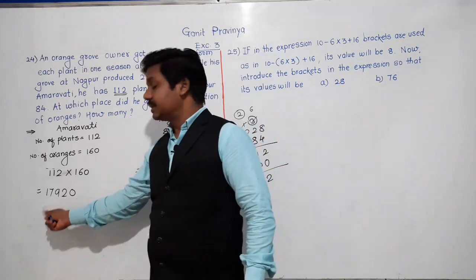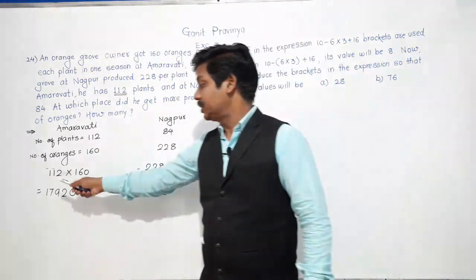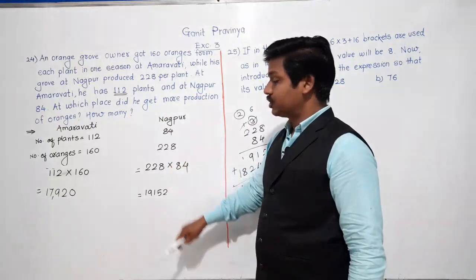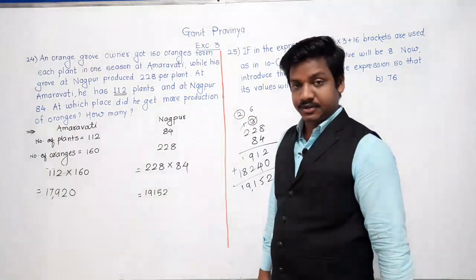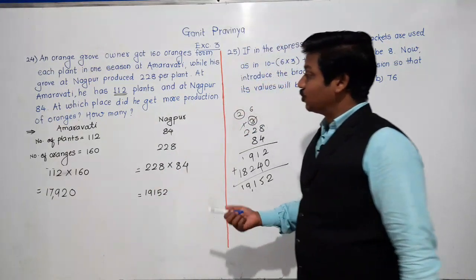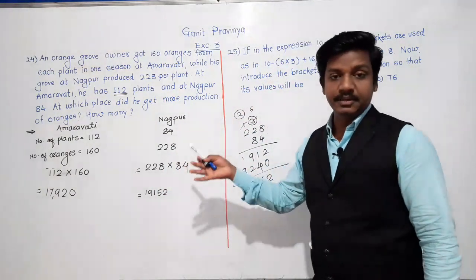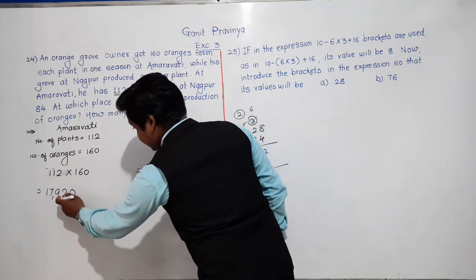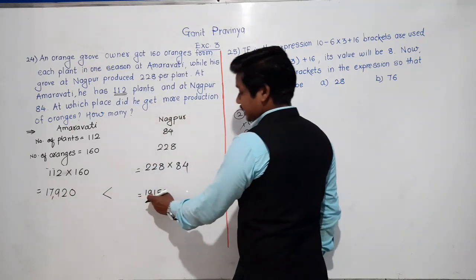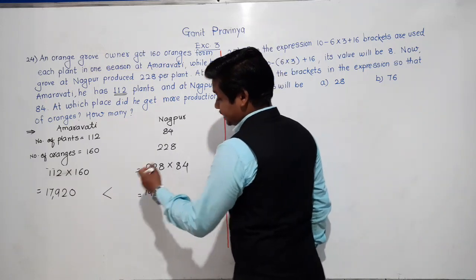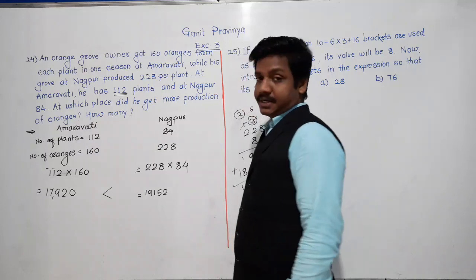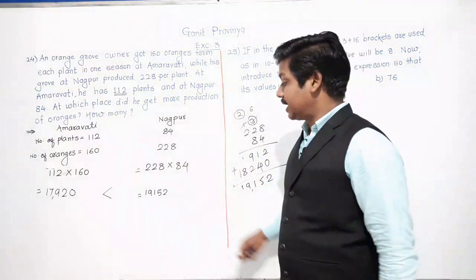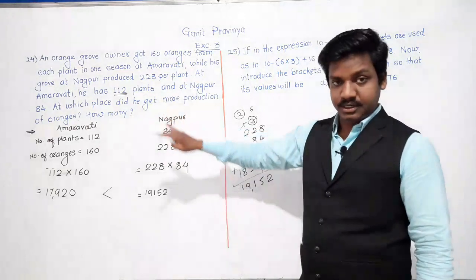Comparing: Amravati grove produced 17,920 oranges and Nagpur grove produced 19,152 oranges. So 17,920 is less than 19,152 — Nagpur produced more. To find how many more oranges Nagpur produced compared to Amravati, we subtract: 19,152 − 17,920.